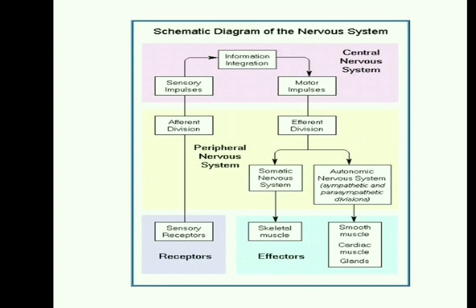The schematic diagram of the nervous system shows receptors — the sensory receptors which receive information — and effectors at the bottom, such as skeletal muscles and smooth muscles, which react. There is communication between the peripheral nervous system and the central nervous system. The afferent division carries sensory neuron signals to the CNS, which then communicates information to the motor neurons via the efferent division, leading to the somatic and autonomic nervous systems for voluntary and involuntary responses respectively.